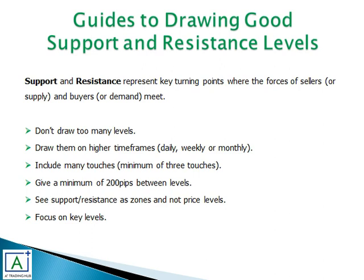Here are guides to drawing good support and resistance levels. Support and resistance represent key turning points where the forces of sellers and buyers meet. Buyers always look to buy at support levels, and sellers always look to sell at resistance levels. Whenever you open a chart and the price is at a support zone, start looking for buying opportunities. If price is at resistance, start looking for selling opportunities.